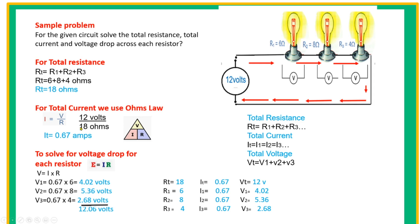Sample problem: for the given circuit, solve for the total resistance, total current, and voltage drop across each resistor. For total resistance in a series circuit, Rt equals R1 plus R2 plus R3. If our resistances are 6 ohms, 8 ohms, and 4 ohms, we simply add them and get 18 ohms.